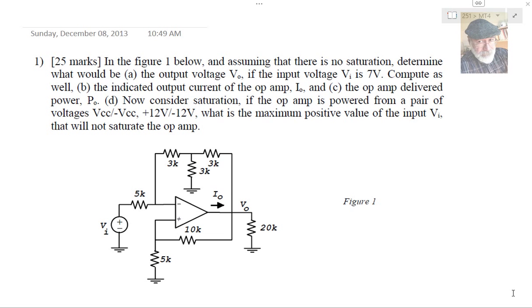In the figure 1 below, and assuming there is no saturation, determine what would be A, the output voltage V0, if the input voltage VI is 7V. Compute as well B, the indicated output current of the op-amp, I0, and C, the op-amp delivered power, P0.